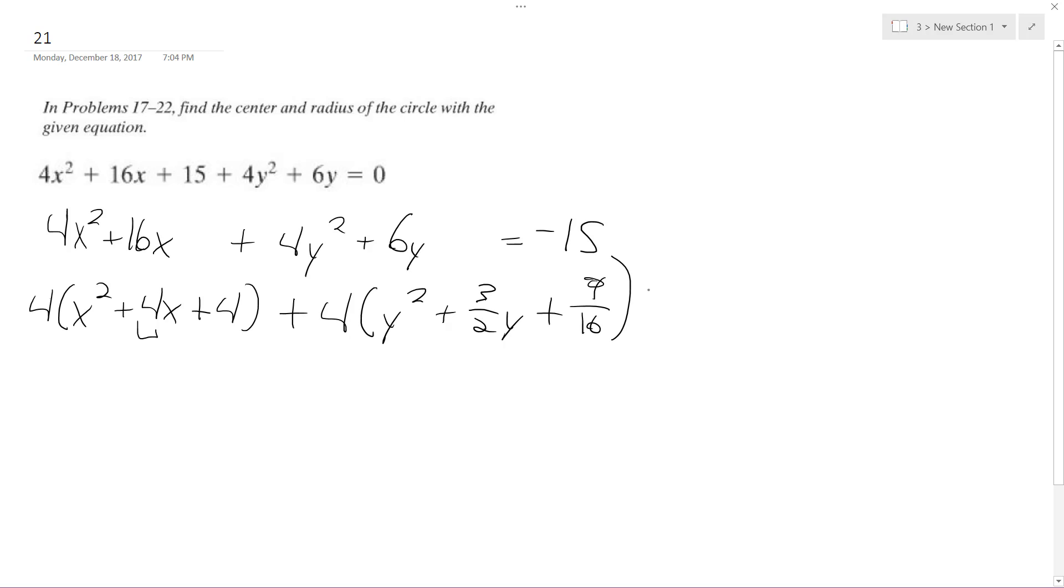And what happens is negative 15, and then 4 times 4 is plus 16, and then you add 9 sixteenths times 4, because I've got to multiply it by the coefficient in front of this whole thing before I can add it over here, so this becomes 9 over 4.